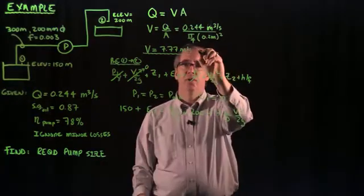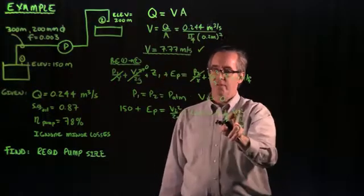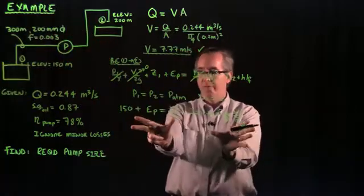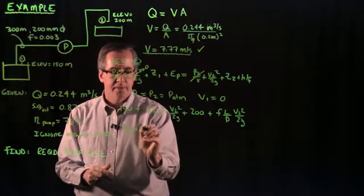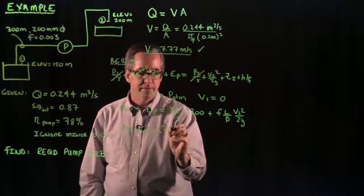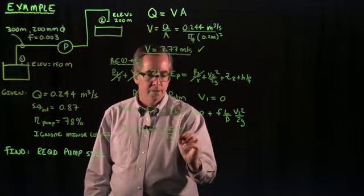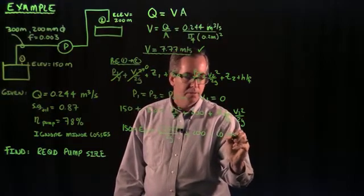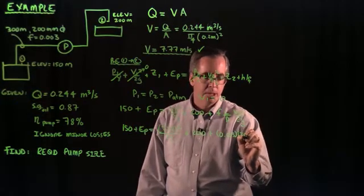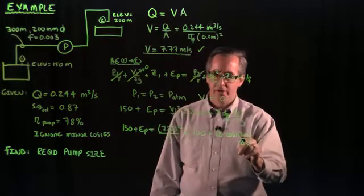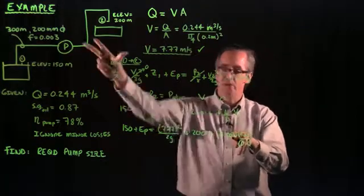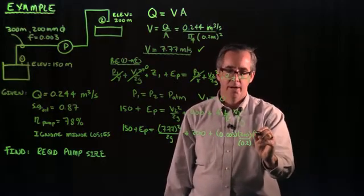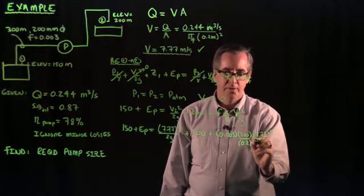Looking at this equation, you see why I solved for the velocity earlier. The velocity that I solved for is the velocity at point 2. It's the same velocity throughout the pipe because the pipe is 200 millimeter diameter pipe throughout. So now all I have to do is just substitute into those terms. So I've got 150 plus Ep is equal to 7.77 squared over 2g. I've got 200, and then my friction factor is 0.003. The length of the pipe is 300 meters. The diameter of the pipe is 0.2. We just have to make sure, that's the most common mistake, is that people sometimes put in the 200 millimeter term right here. You have to make sure if you have meters in the numerator, you have meters in the denominator.